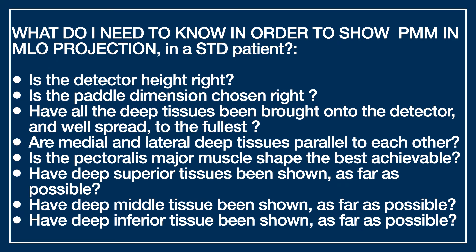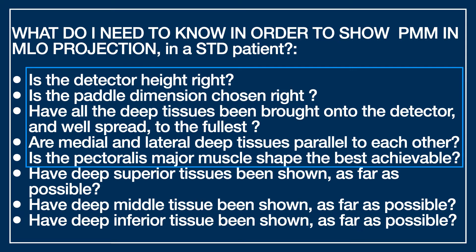What do I need to know in order to show the Pectoralis Major muscle in MLO projection? These are the questions I'll try to answer in this lesson: Is the height of the detector right? Is the paddle dimension I chose right? Have all the deep tissues been brought onto the detector and stretched — widespread — to the fullest? Are medial and lateral deep tissues parallel to each other? Is the Pectoralis Major muscle shape the best achievable?